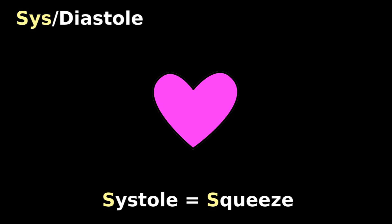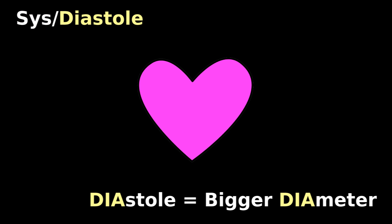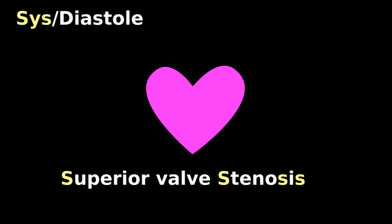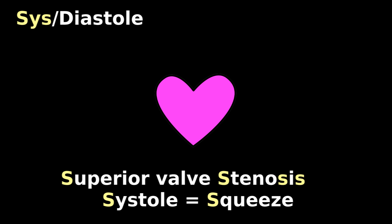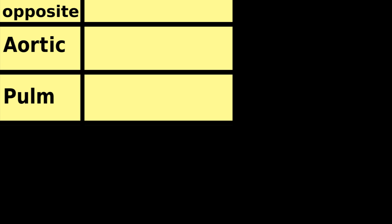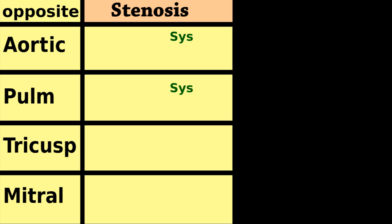Murmurs can occur during systole or diastole. Systole is when the heart squeezes hard. Diastole is when the heart has the biggest diameter. Superior valve stenosis is systolic. By opposites, if superior stenosis is systole, bottom valve stenosis is diastole.